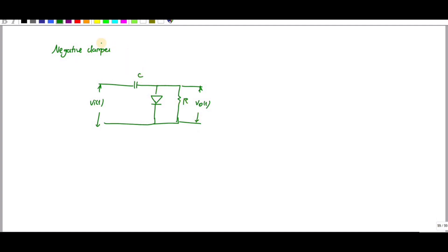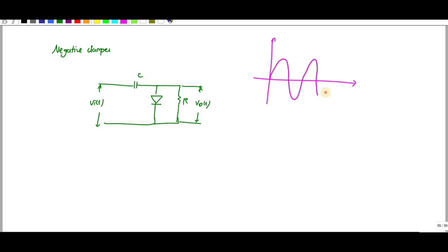The difference between the positive clamper and the negative clamper is the connection of the diode — if you alter the diode direction it becomes a positive clamper. For the negative clamper, you need to check when the diode conducts. If I give a sine wave as input, the diode will conduct only during the positive cycle.